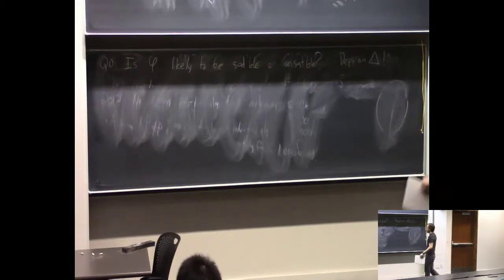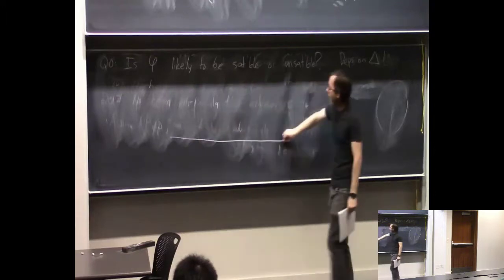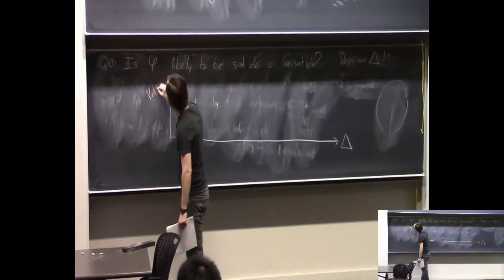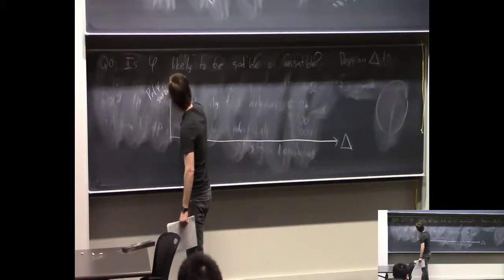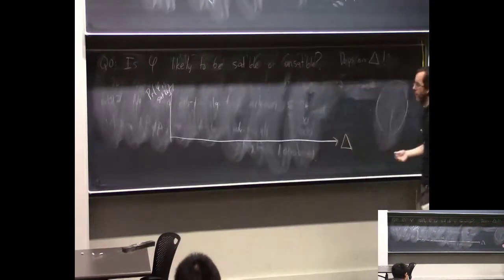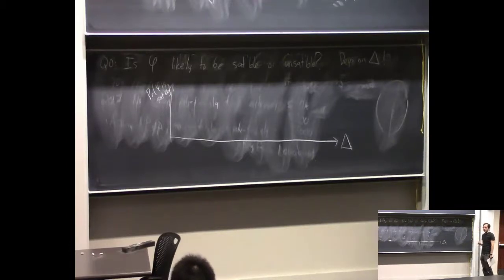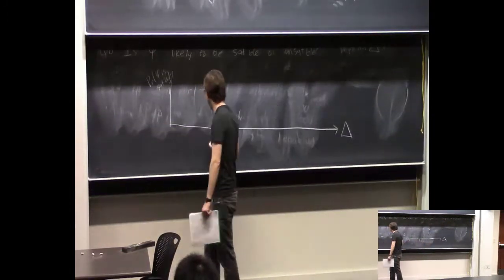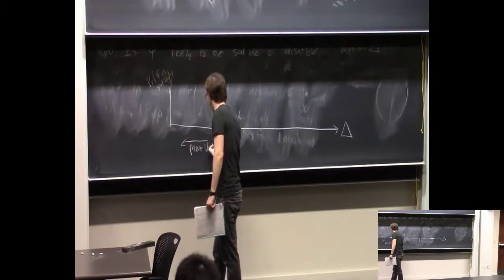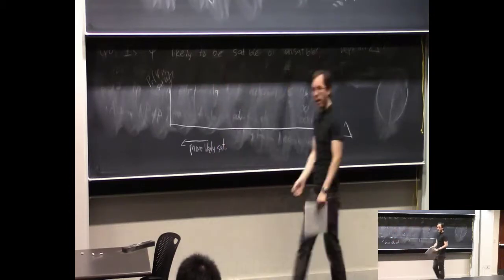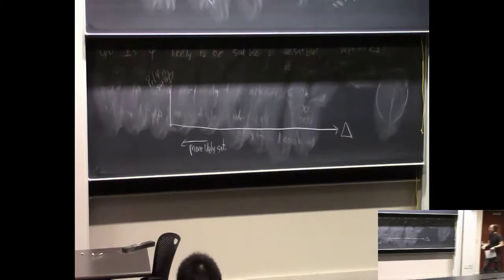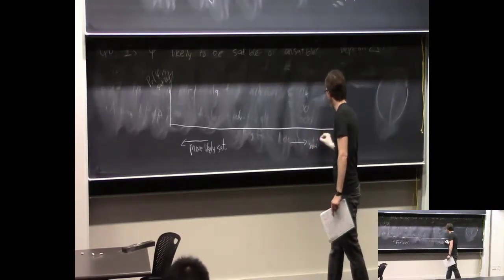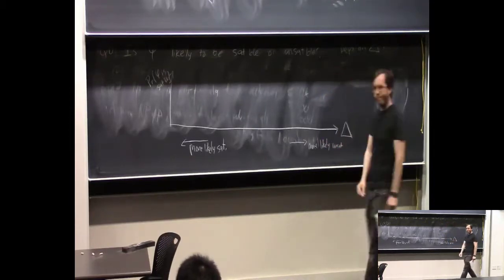If δ is small, there are very few clauses — very few constraints — so it's more likely to be satisfiable. That's the 'more likely satisfiable' regime. Conversely, if δ is really large, you're adding more and more clauses and constraints, making it more likely to be unsatisfiable. The first fact — easy enough to be an exercise using the union bound — is that if δ is bigger than about 5.2, then when you choose φ at random, φ is exponentially unlikely to be satisfiable. The probability of being satisfiable is something like 1.1^{-n}.